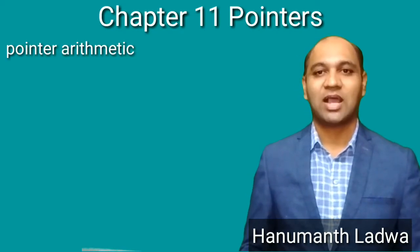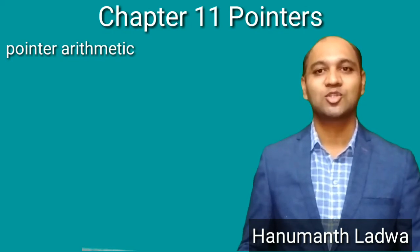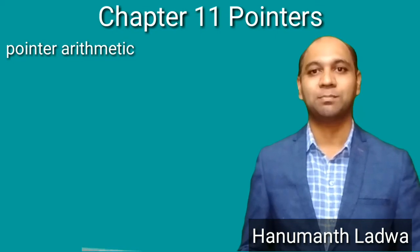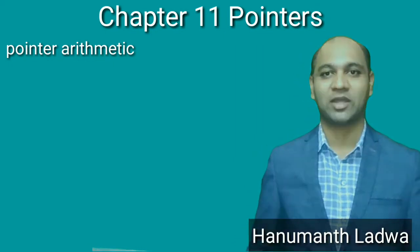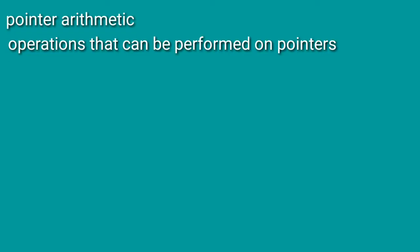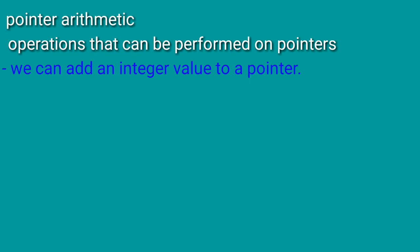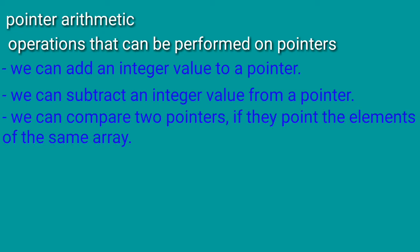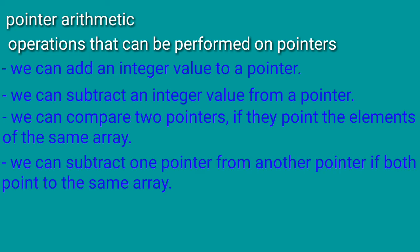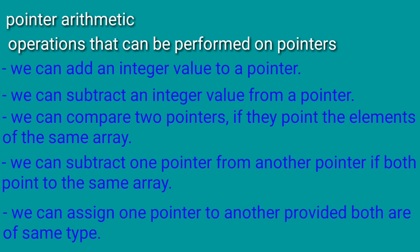Pointer arithmetic: since a pointer holds the address of another variable and an address is a numeric value, we can perform arithmetic operations. Arithmetic operators that can be used include increment (++), decrement (--), addition (+), and subtraction (-). Operations that can be performed on pointers are: adding an integer value to a pointer, subtracting an integer value from a pointer, comparing two pointers if they point to elements of the same array, and subtracting one pointer from another provided both are of the same type.